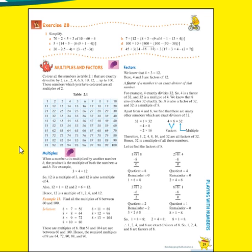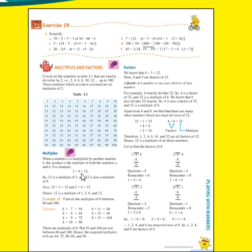Listen once again — when a number A is multiplied by another number B, the product is the multiple of both numbers A and B. For example, 3 fours are 12. Here, 12 is a multiple of 3 because we get 12 after multiplying 3 by 4. So 12 is the multiple of both 3 and 4.